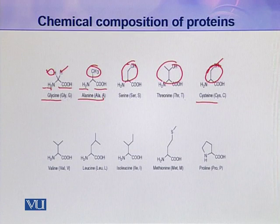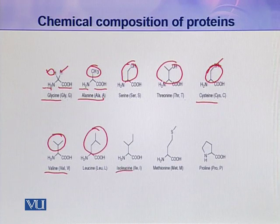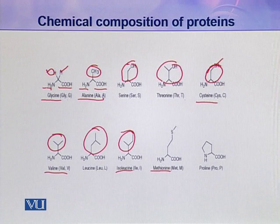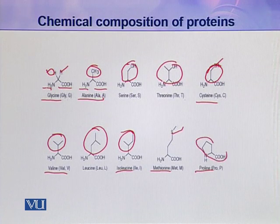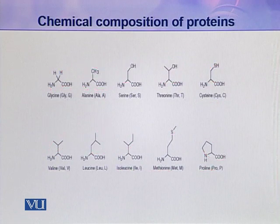Then there is valine, followed by leucine and isoleucine, each with their respective R groups. Another amino acid is methionine, which also contains sulfur — so cysteine and methionine are the two sulfur-containing amino acids. Then there is proline, whose R group forms a ring structure, making proline quite different from all other types of amino acids.